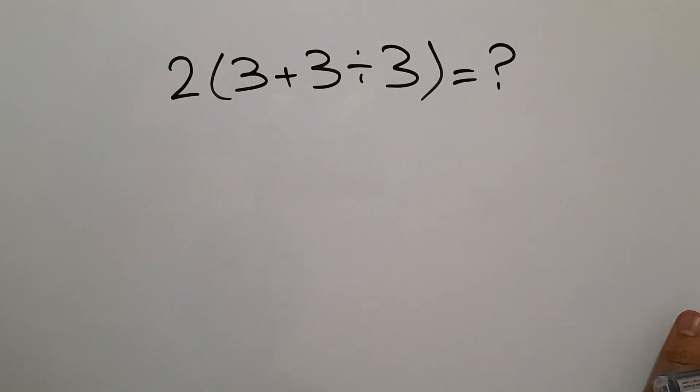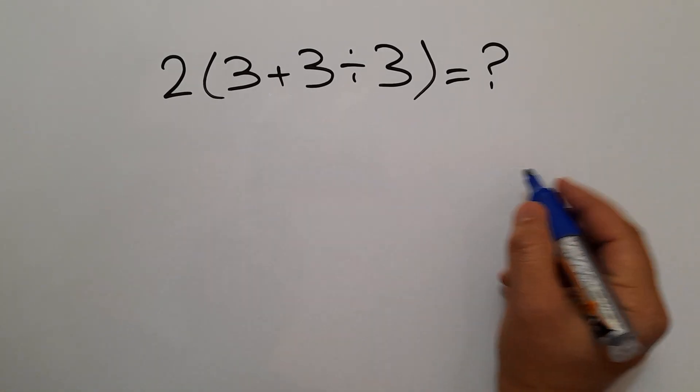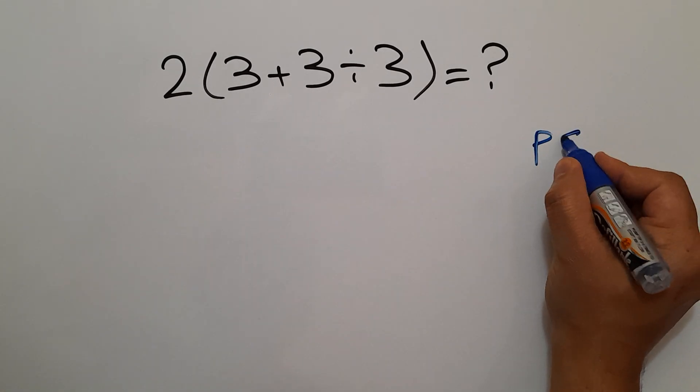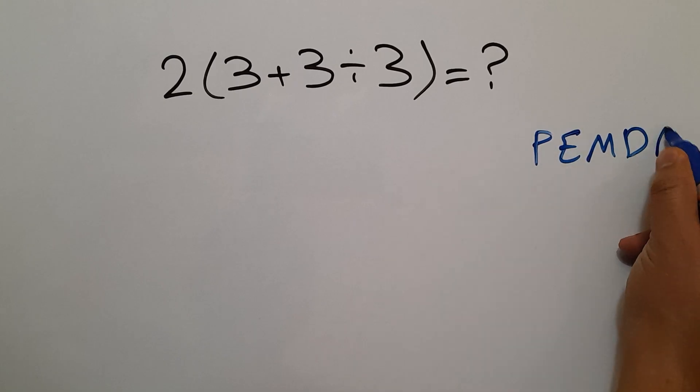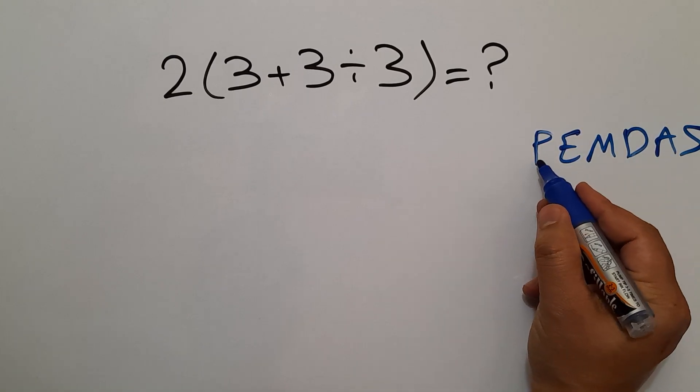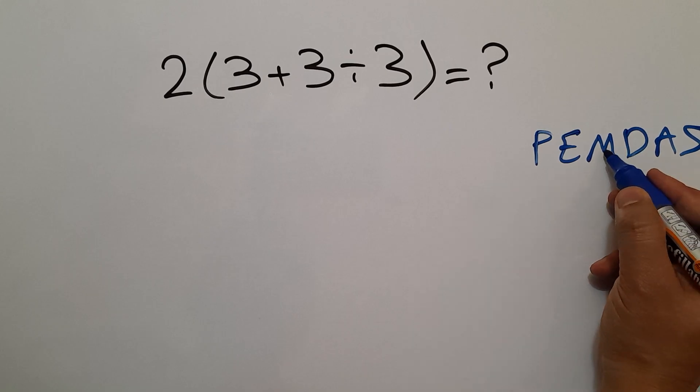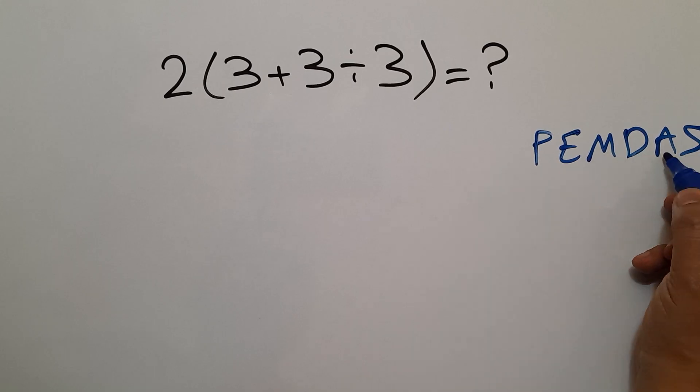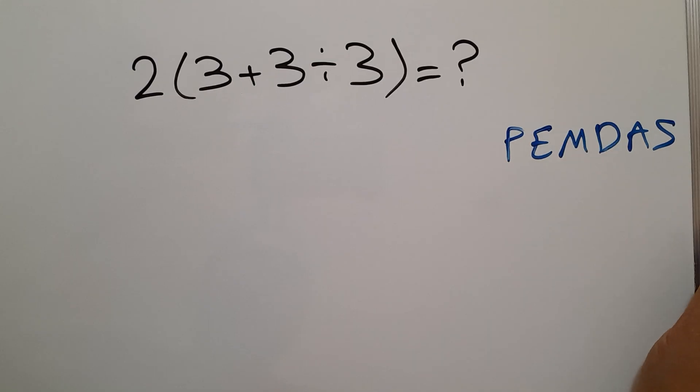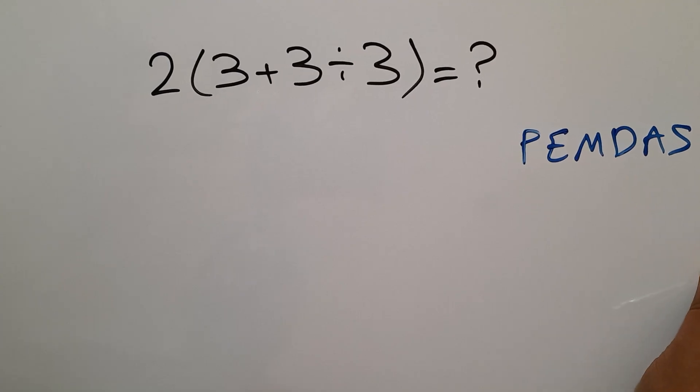No, the correct path. According to the order of operations, which is PEMDAS, P stands for parentheses, E stands for exponents, M and D stands for multiplication and division, A and S stands for addition and subtraction.